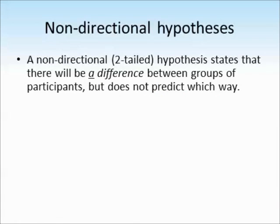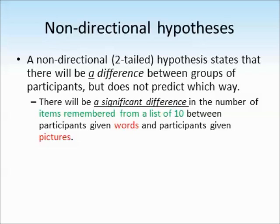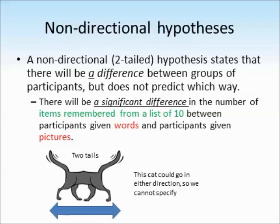A non-directional hypothesis is also called a two-tailed hypothesis. It states that there will be a difference between the groups of participants, but doesn't predict which way that difference will lie. For example: 'There will be a significant difference in the number of items remembered from a list of 10 between participants given words and participants given pictures.' We might not know whether words or pictures will be remembered better, so we can't specify the direction. To illustrate this with a cat example: here is a mutant cat with two tails — because it has two tails, we don't know which way it's going to go, so it could go in either direction.